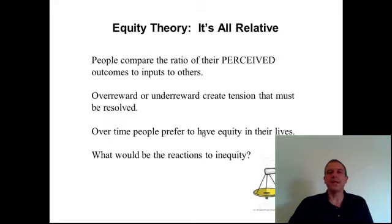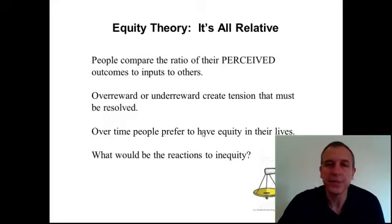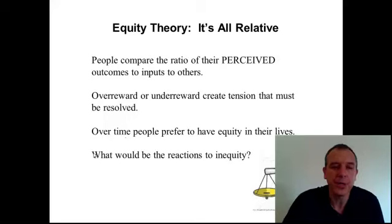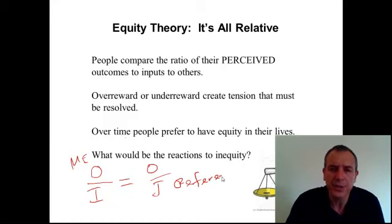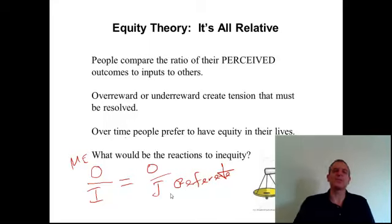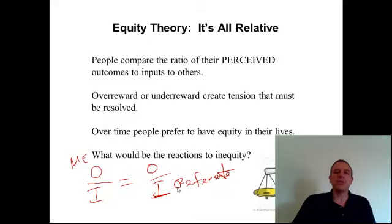Equity theory is a comparison theory of motivation. It's my ratio of outcomes to inputs compared to some other person — what we call a referent or comparison person. So I compare myself to how other people are doing.